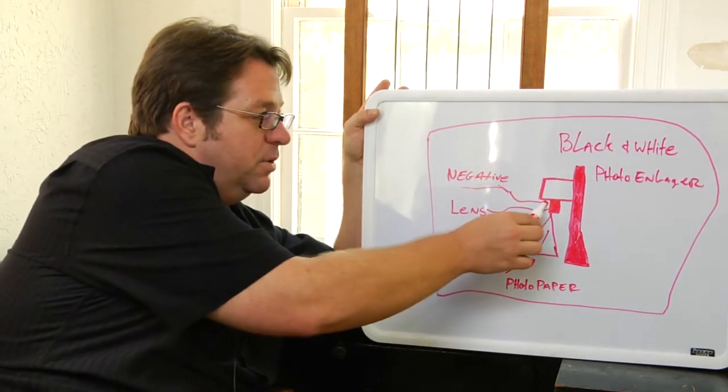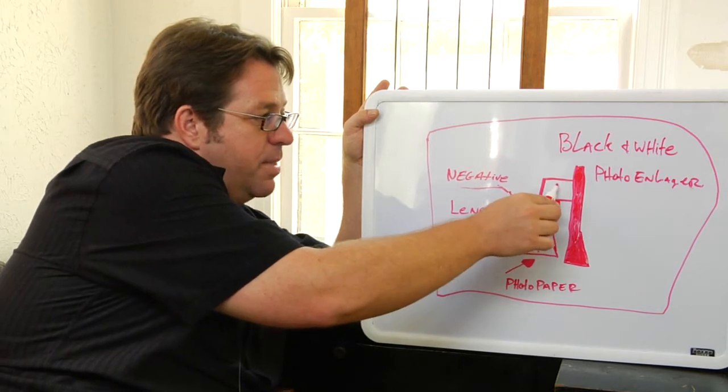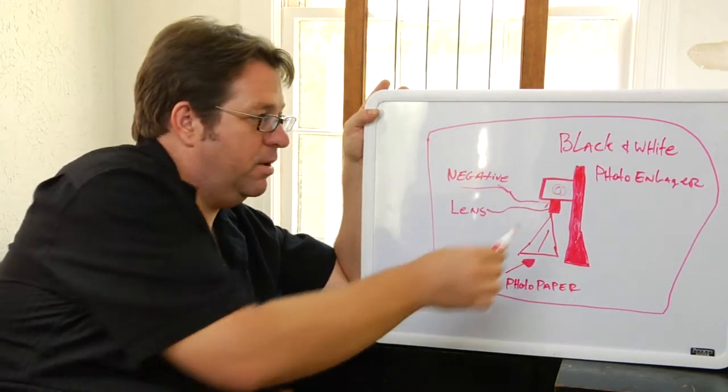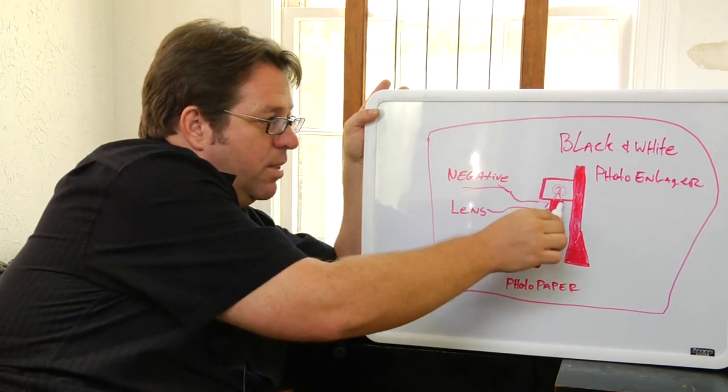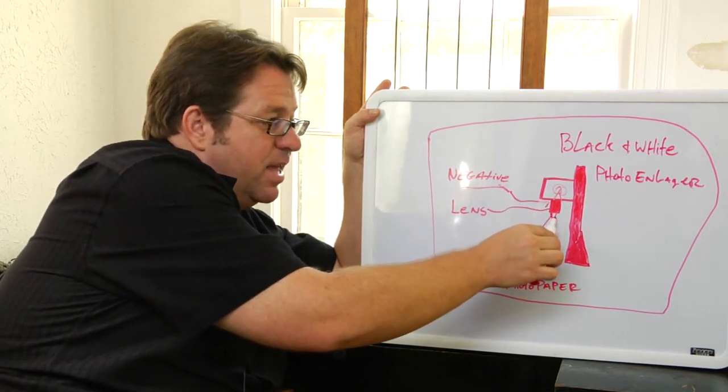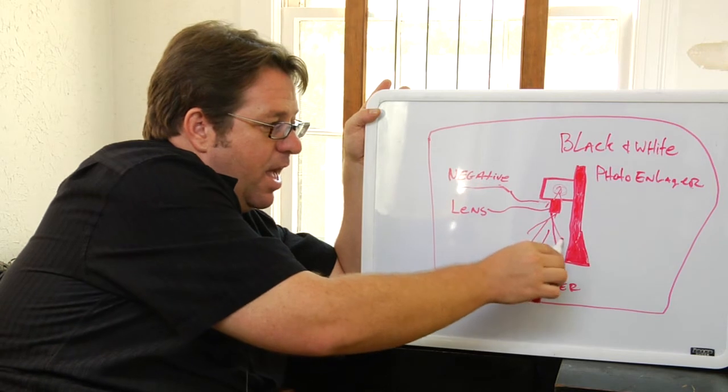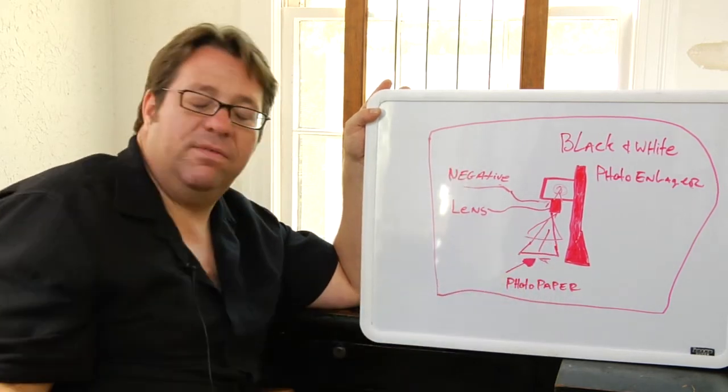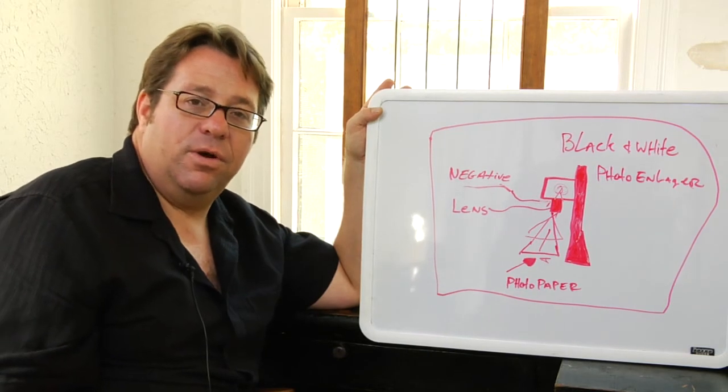On this top part right here there is a bulb, a special type of light bulb that shines through the negative, then through a lens, and optically it comes out of the lens onto a piece of light sensitive photographic paper.